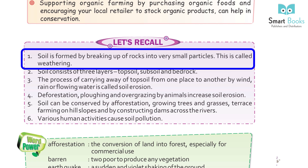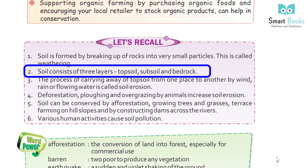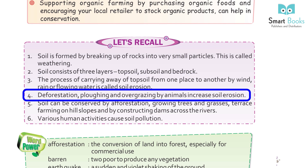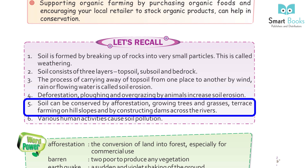Let's recall: 1. Soil is formed by breaking up of rocks into small particles; this is called weathering. 2. Soil consists of three layers: topsoil, subsoil, and bedrock. 3. The process of carrying away of topsoil from one place to another by wind, rain, or flowing water is called soil erosion. 4. Deforestation, ploughing, and overgrazing by animals increase soil erosion. 5. Soil can be conserved by afforestation, growing trees and grasses, terrace farming on hill slopes, and by constructing dams across the rivers.